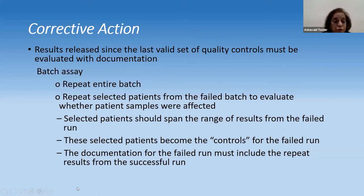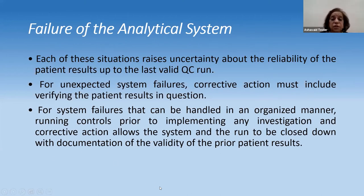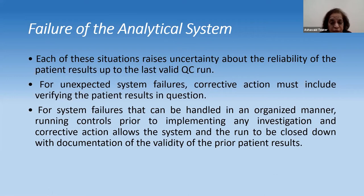For batch assays, repeat the entire batch or repeat selected patients from the failed batch to evaluate whether patient samples were affected. Select patients across the full range of results from the failed run — they become your controls. Documentation of the failed run must include repeat results from a successful run. For unexpected system failures, corrective action must include verifying patient results in question, running controls before implementing any new corrective action, and documenting the validity of prior patient results.